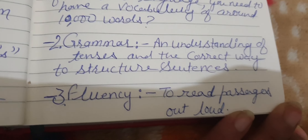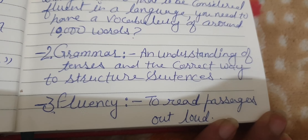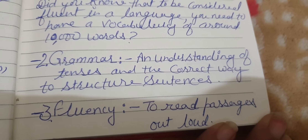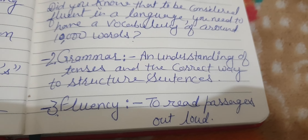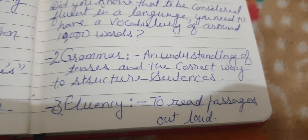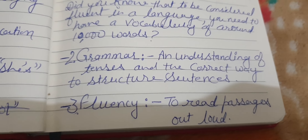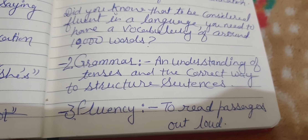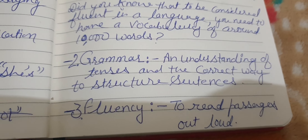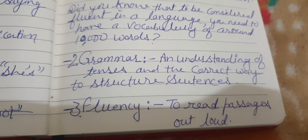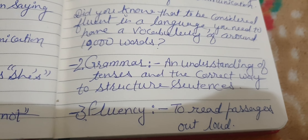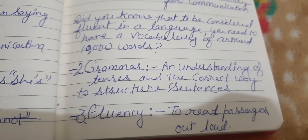The second element is grammar — understanding tenses and the correct way to structure sentences. You need to know present tense, past tense, and future tense so you can convey your message to the listener. For structure, we use the subject first, followed by the verb in its correct form, then the object.